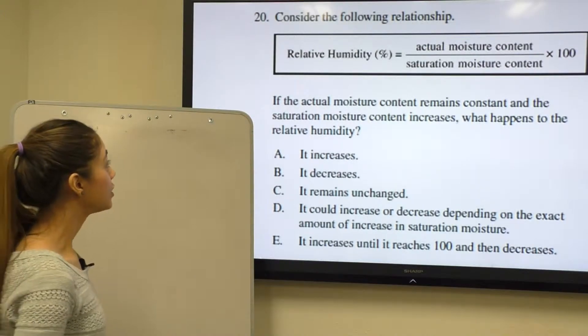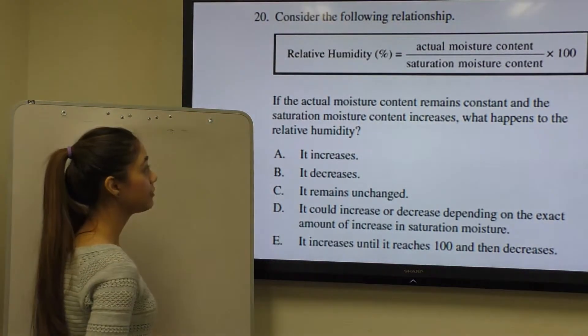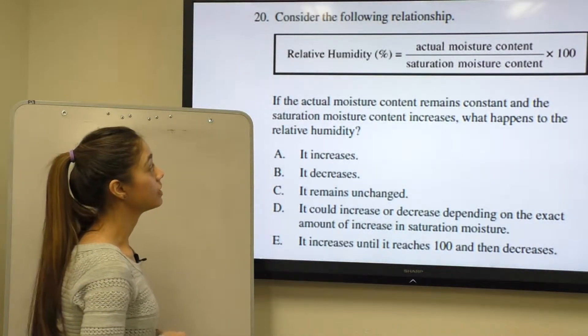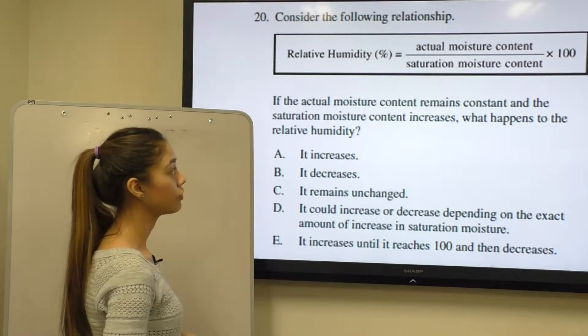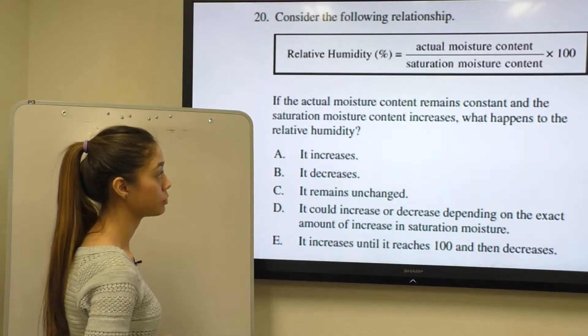Question number 20 says, consider the following relationship. Relative humidity percent is equal to actual moisture content over saturation moisture content times 100.